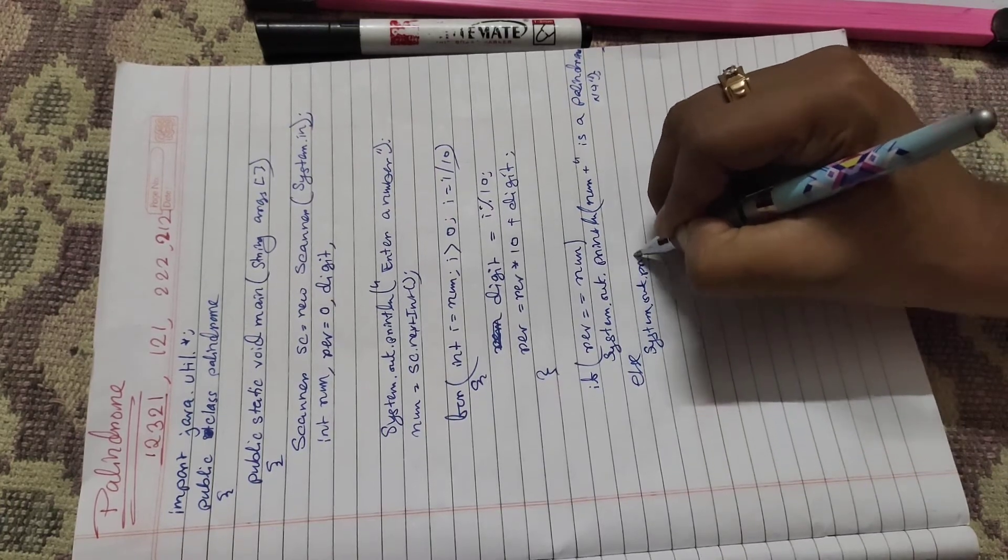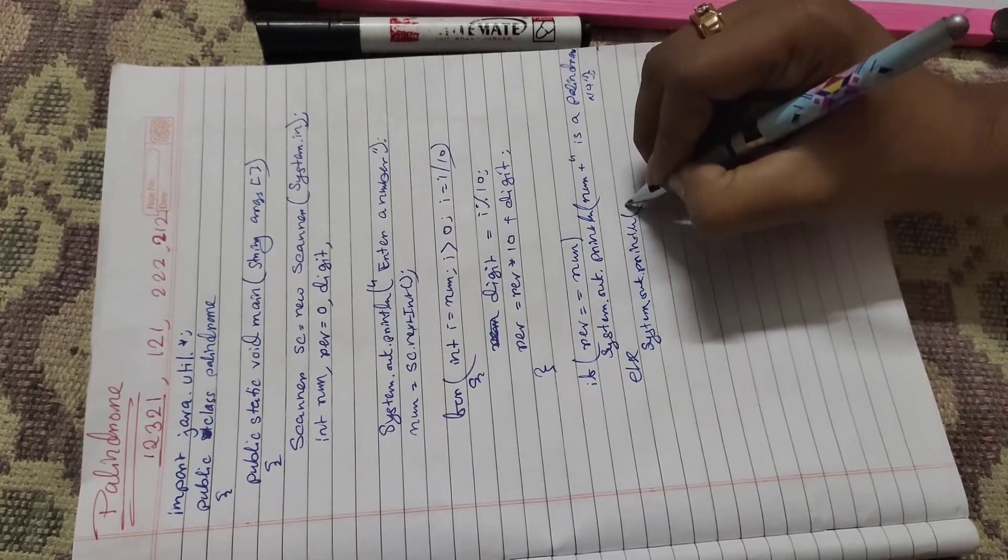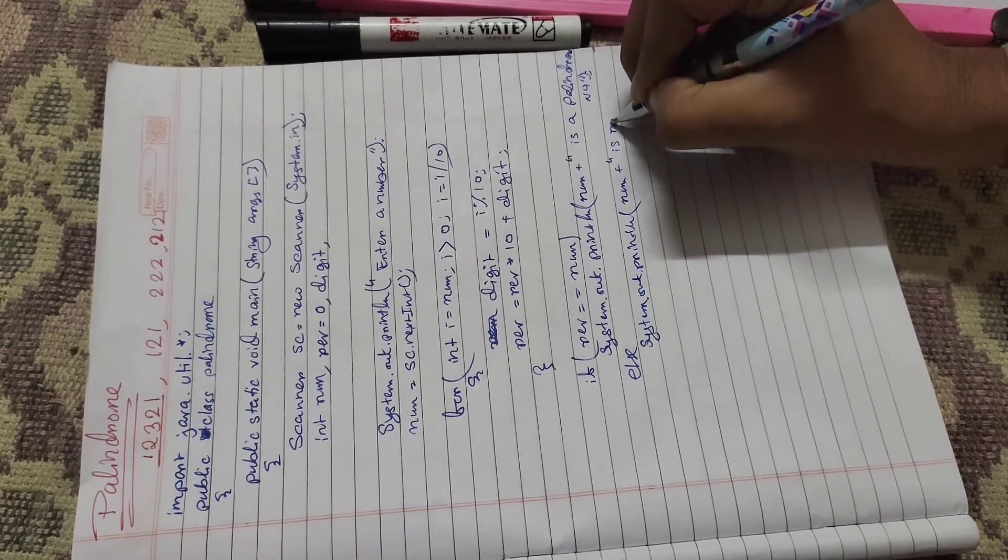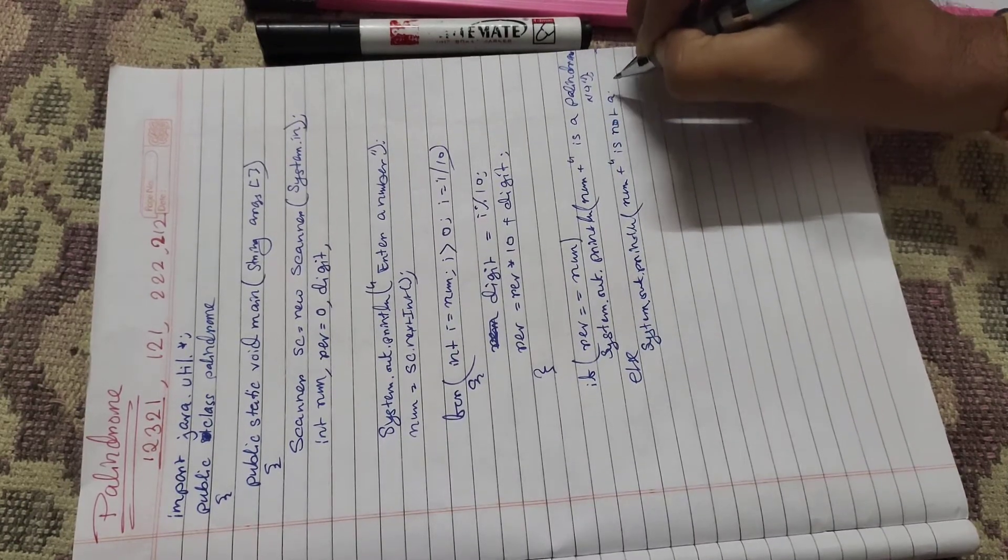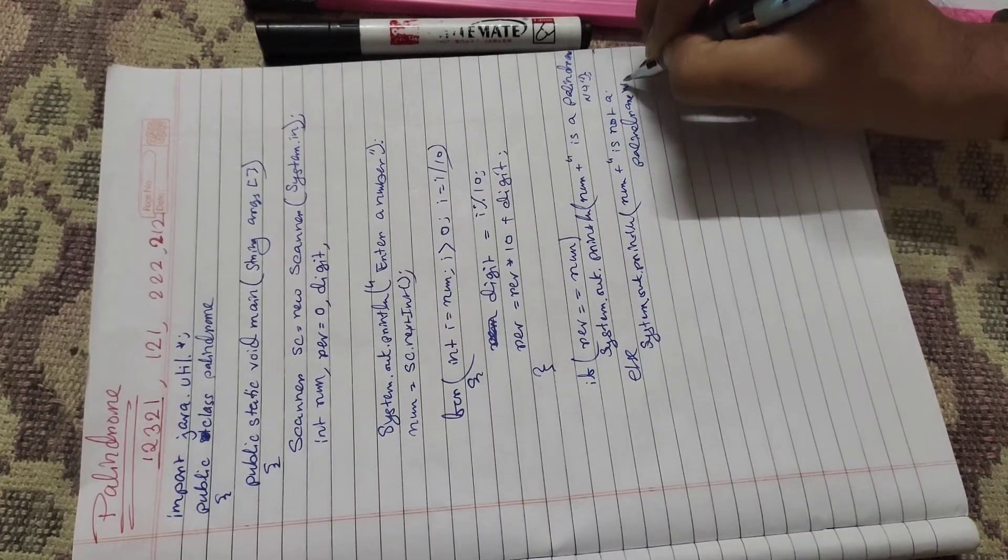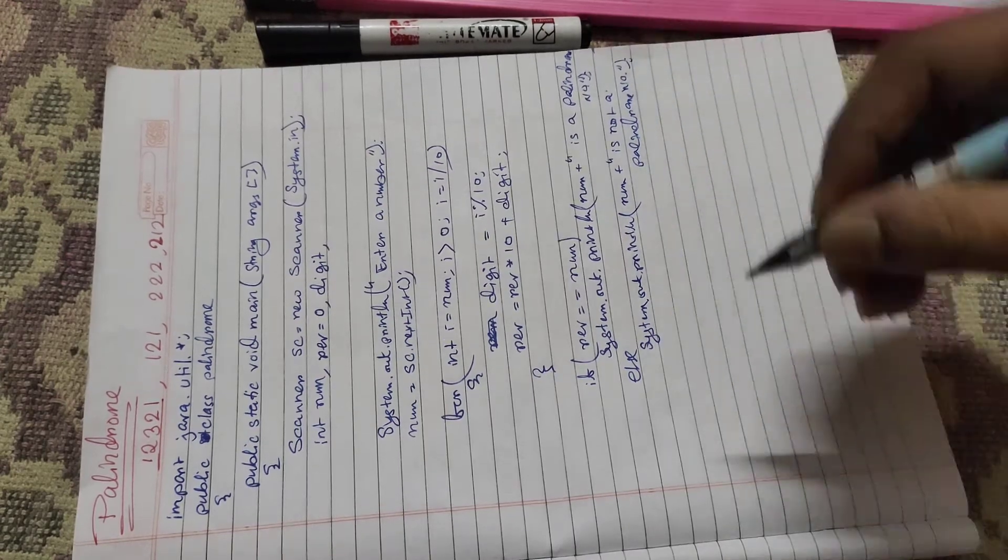Else System.out.println num "is not a palindrome number".